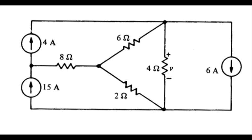There are a number of ways to proceed here. Since I see a lot of current sources, I'm going to guess that it might be easy to find the short circuit current, and once we've found that value, we could then find the Thevenin voltage as short circuit current times the Thevenin resistance. So let's proceed with that and see what happens.